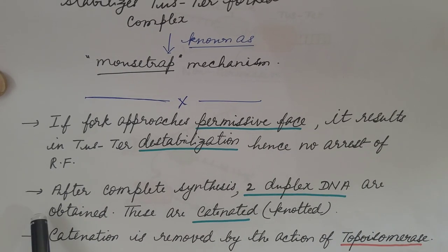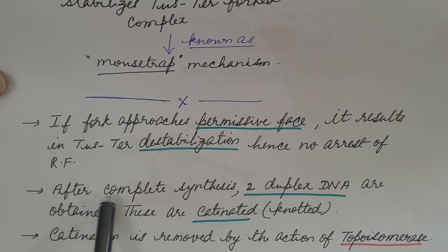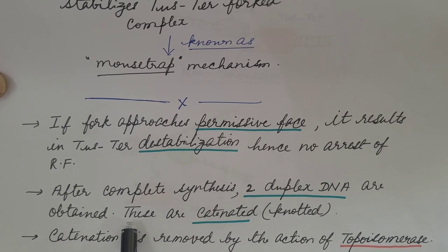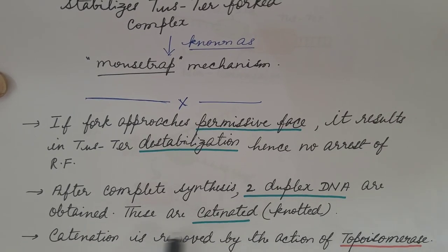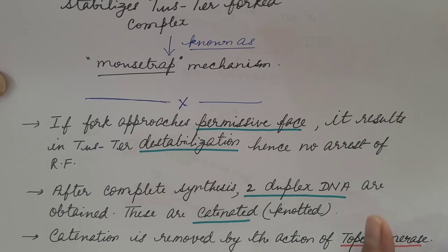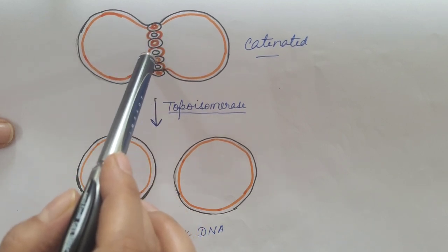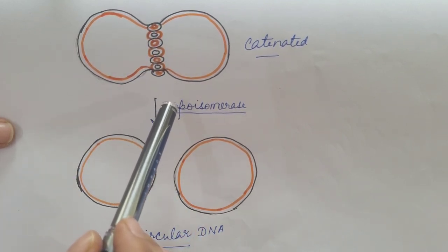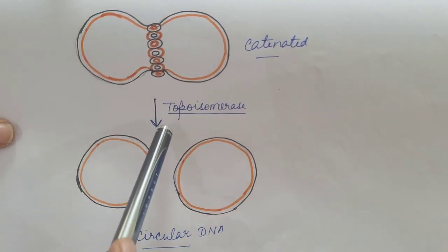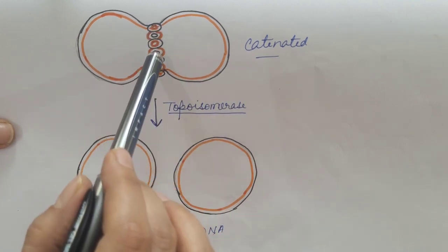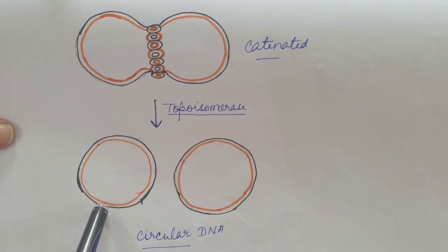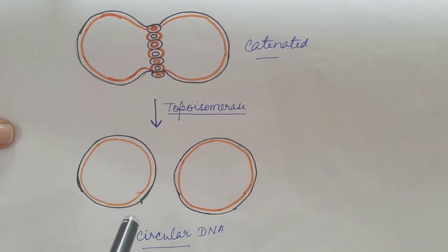When the termination of DNA replication takes place, after complete synthesis, two duplex DNAs are obtained. These are catenated or knotted. Catenation is removed by the action of topoisomerase enzyme, which decatenates them and two circular DNAs are obtained. One molecule of DNA is then transferred to each daughter cell.